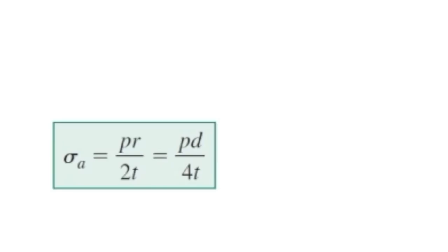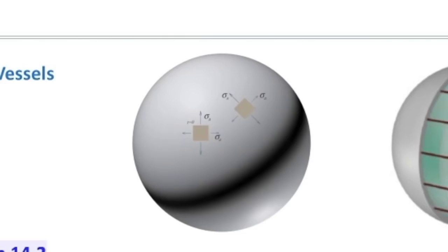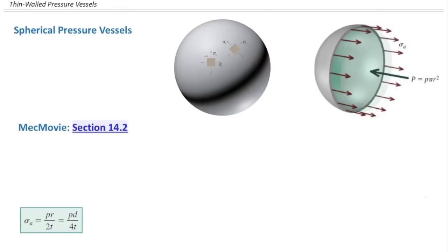The key fact about spherical pressure vessels is that the normal stress is the same in every direction you cut the sphere, because the sphere is symmetric in every direction. So the normal stress is simply σ_a = pd / 4t. There is no in-plane shear stress developed in this element. However, there will be some out-of-plane shear stress — also called absolute maximum shear stress.